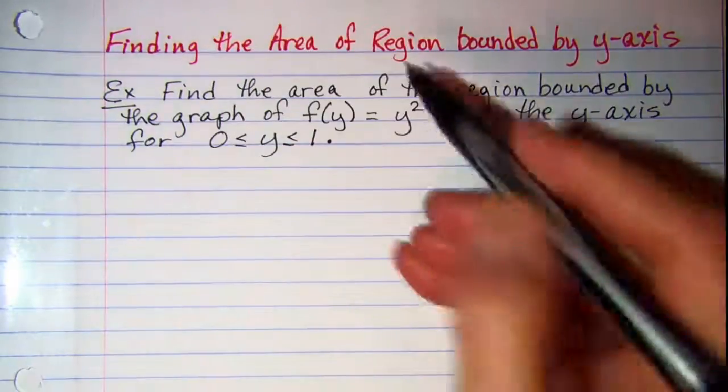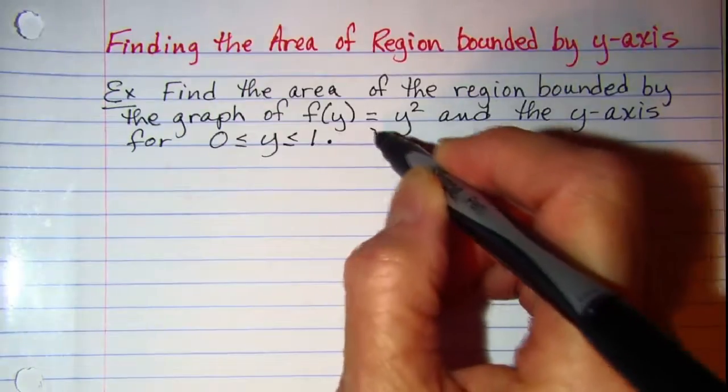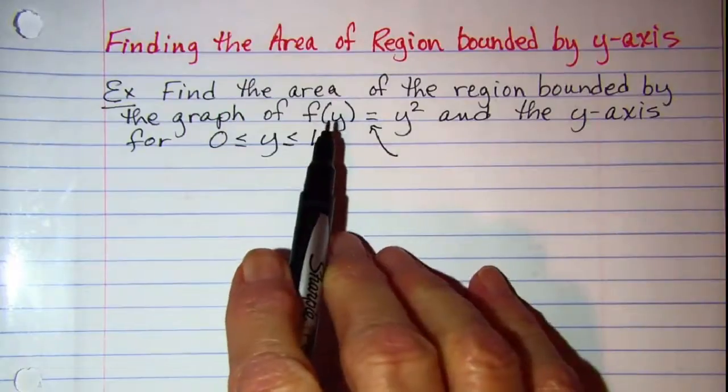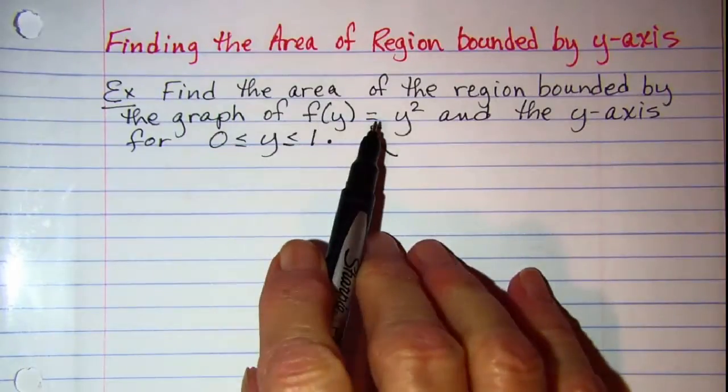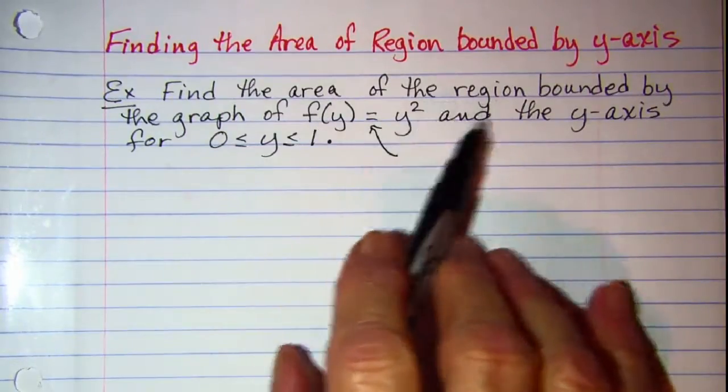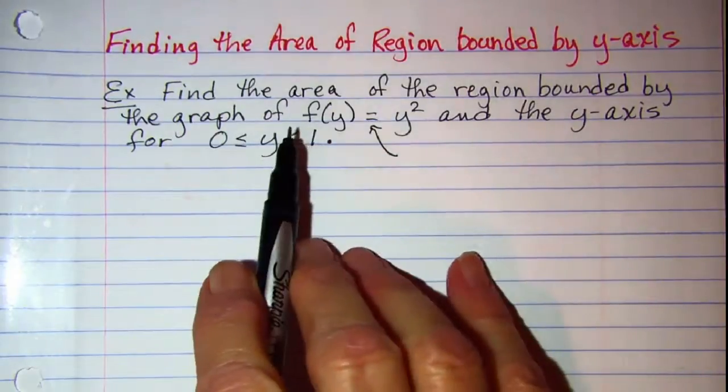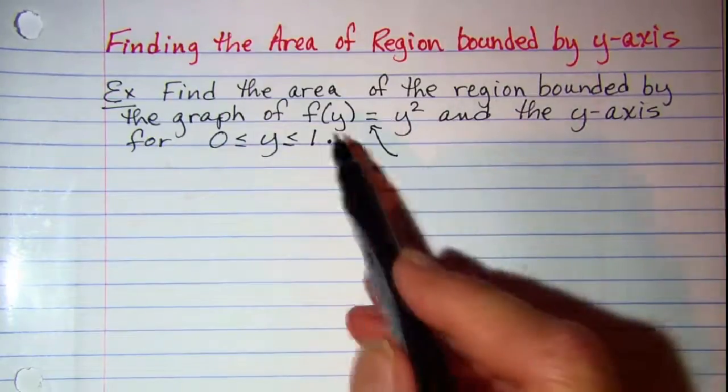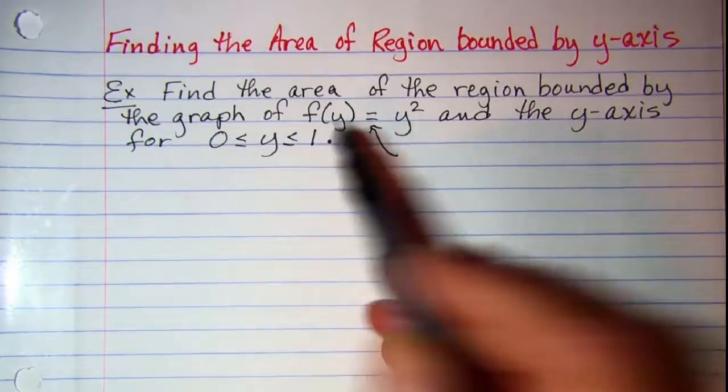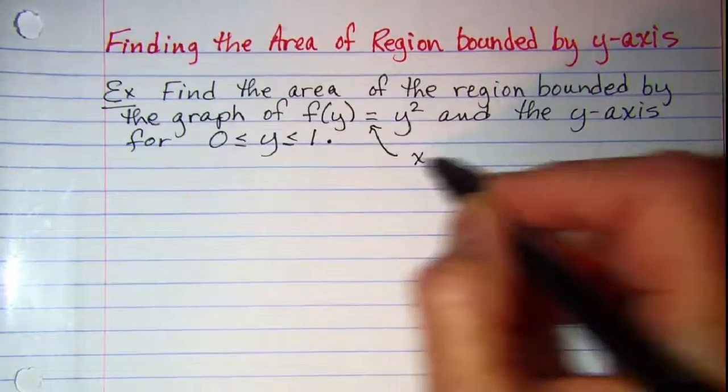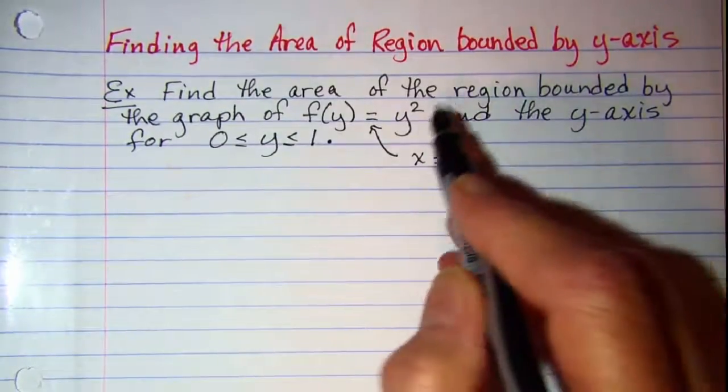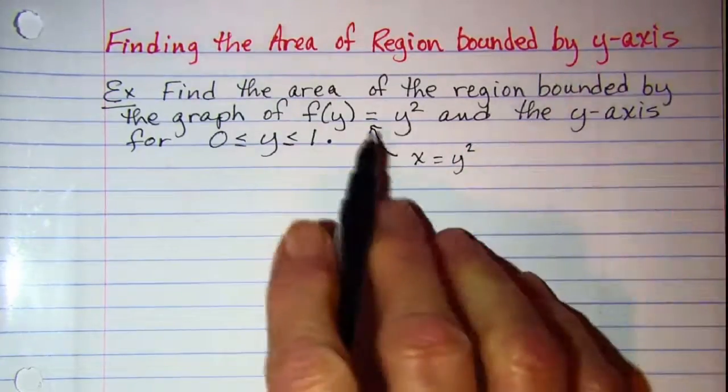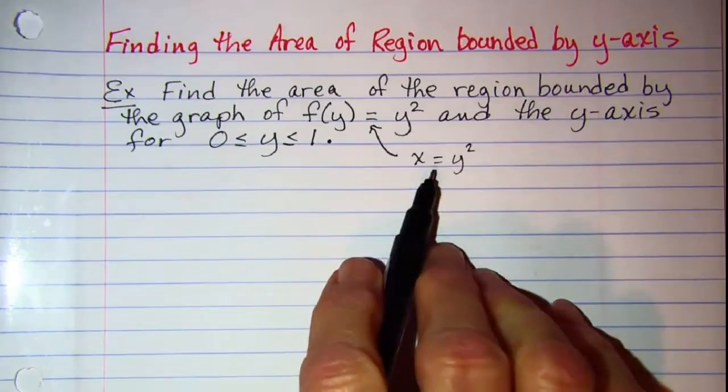Now this may be the first time you've seen this notation so let's take a look at that first. Usually we see f of x equals and then our expression is in terms of x. Because this is f of y equals, that means that this left side could be replaced by x, and then the right side is in terms of y. So these two equations are the same thing.